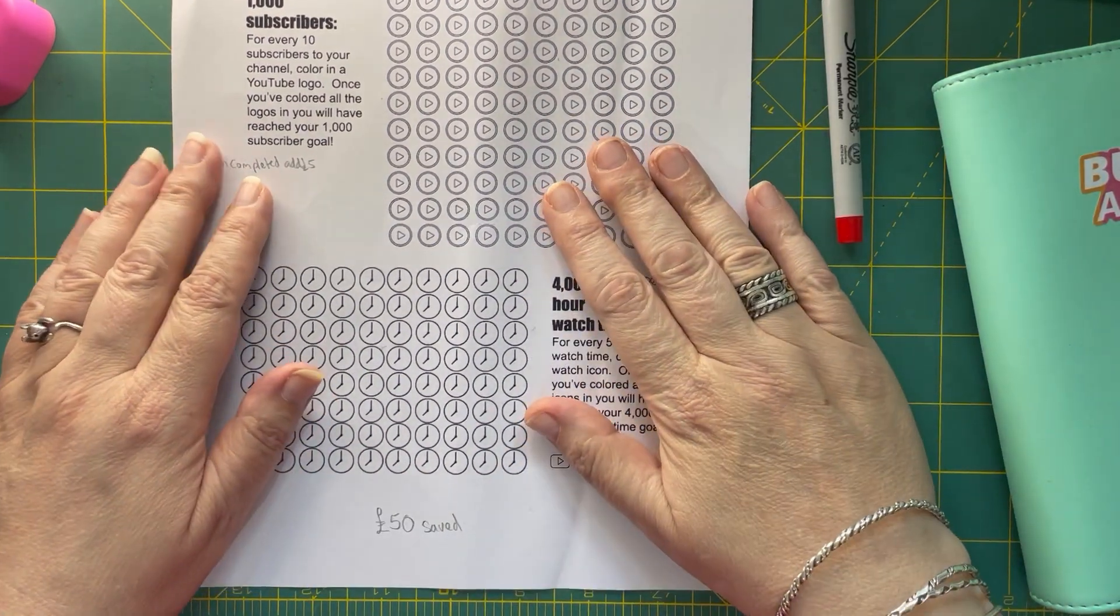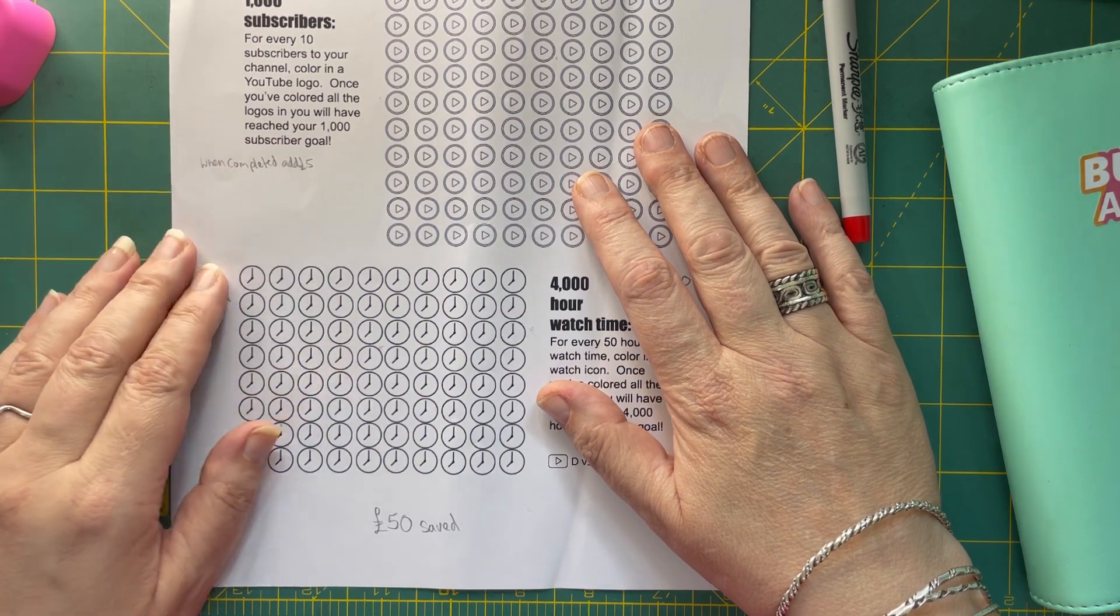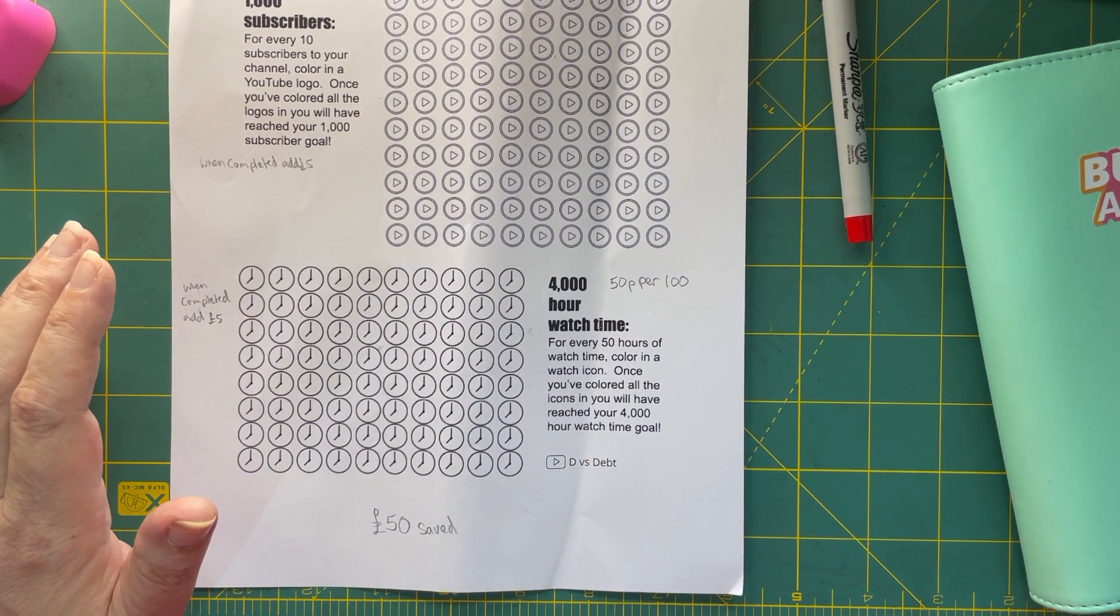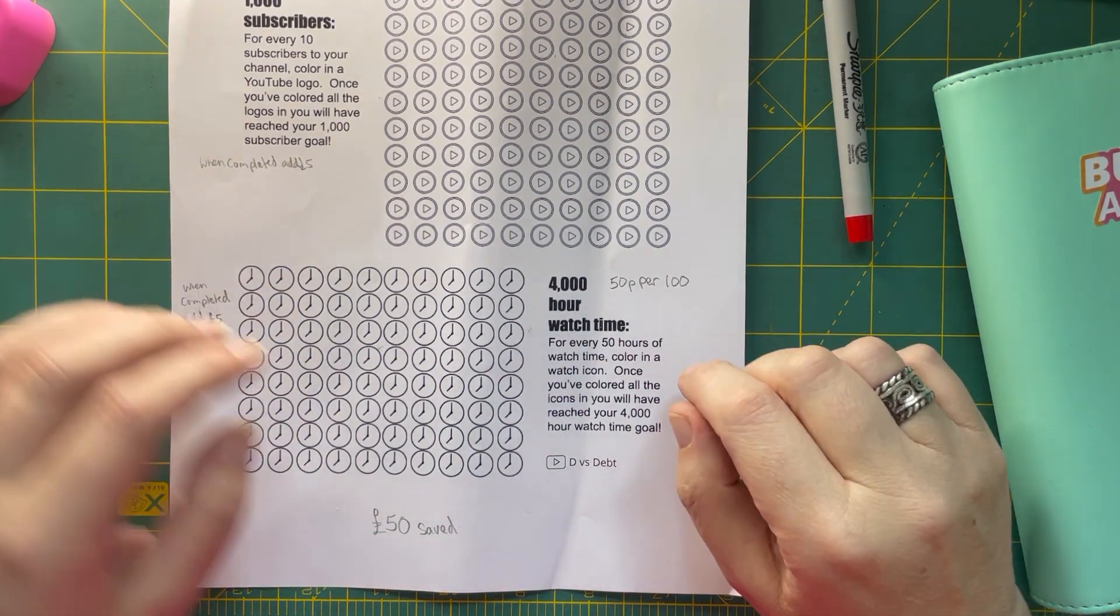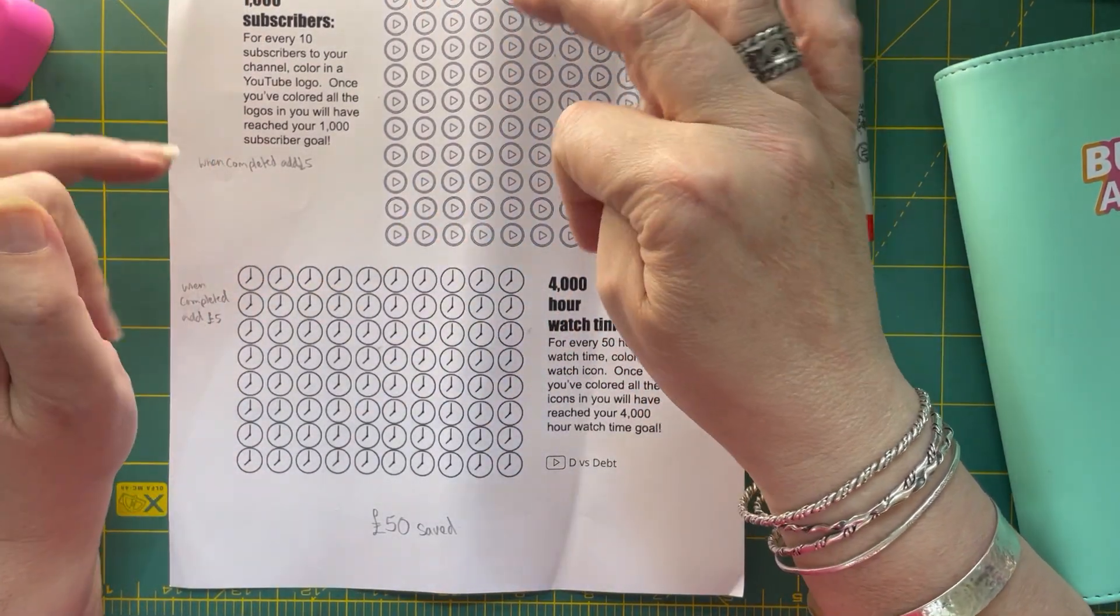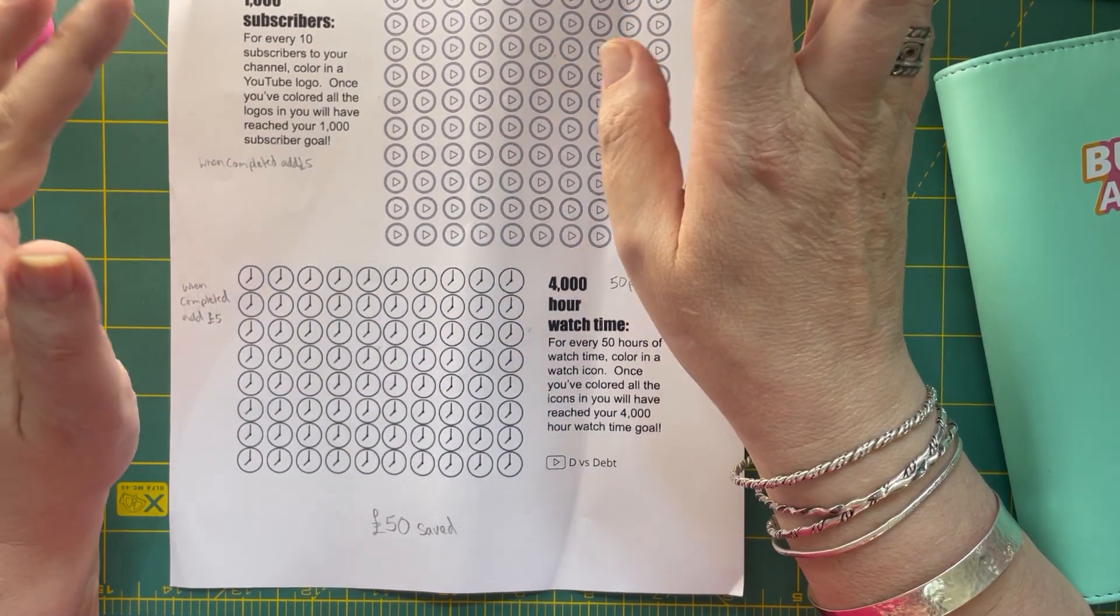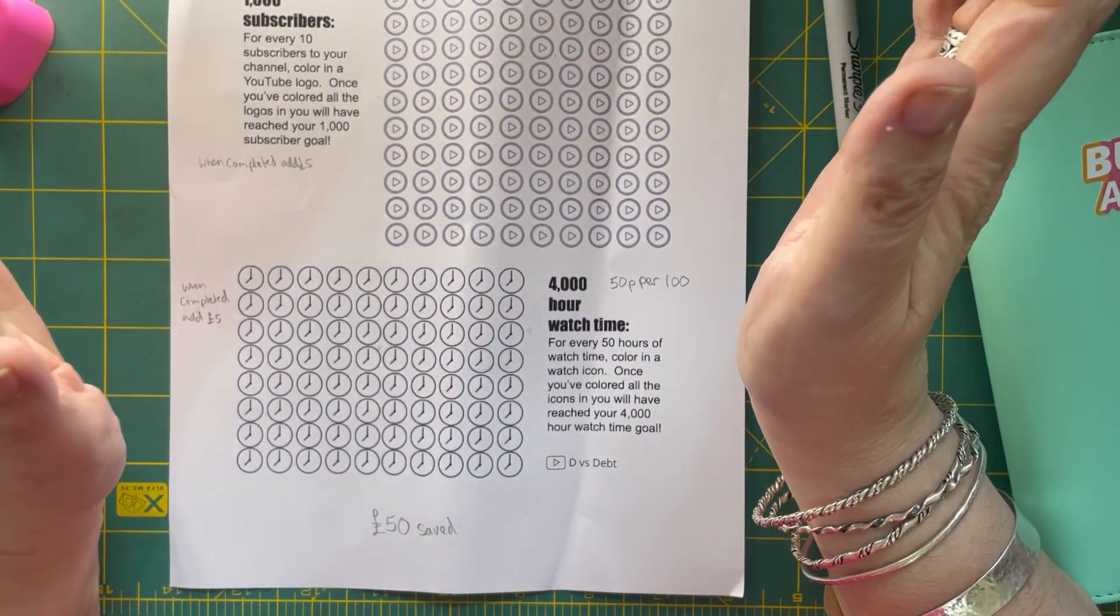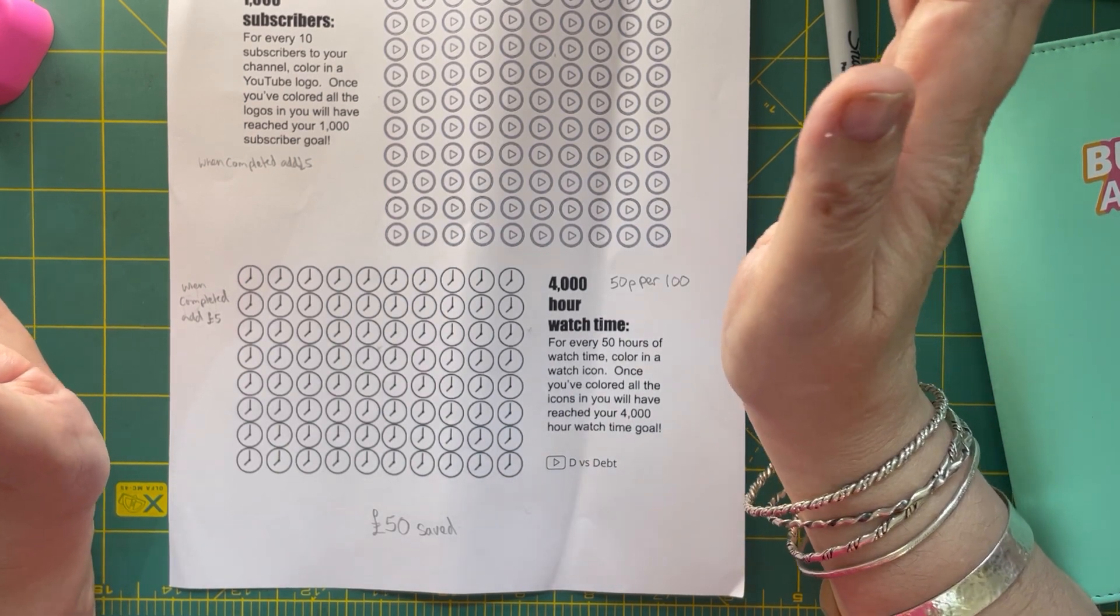Right now, I watch and subscribe to a lovely YouTuber called Cindy Cat Budgets. Go and check her page out. She's from across the pond in America, but I just love her, she's absolutely lovely. And through her, I saw that she had this YouTube monetization tracker thing. And she told us where she got it from. And I eventually found it. And I'll put the link down in the bottom because it's going to be a lot easier than me trying to explain.